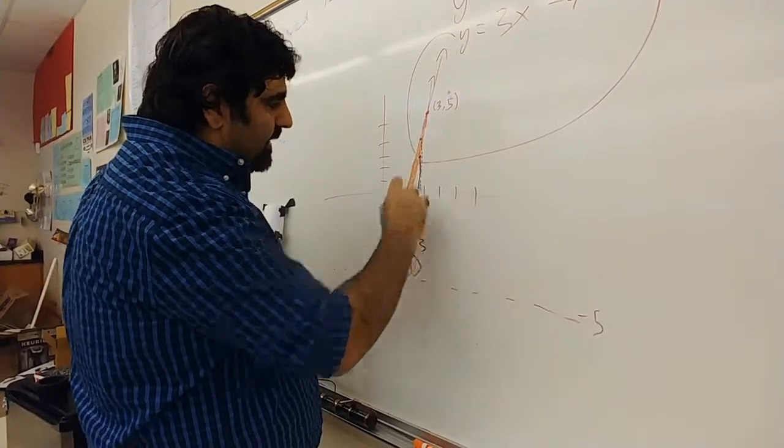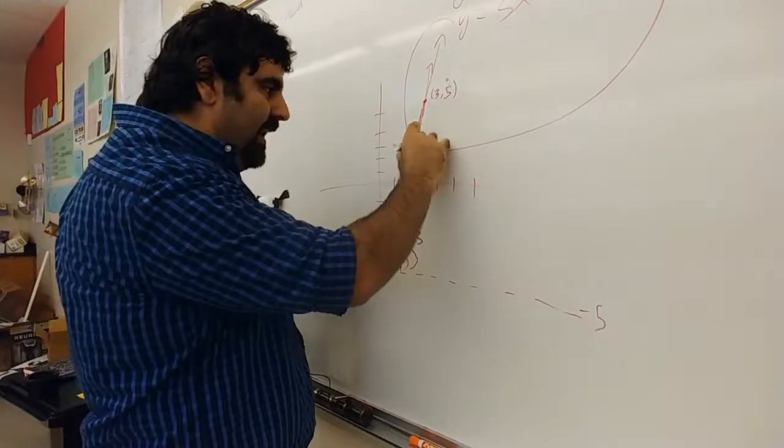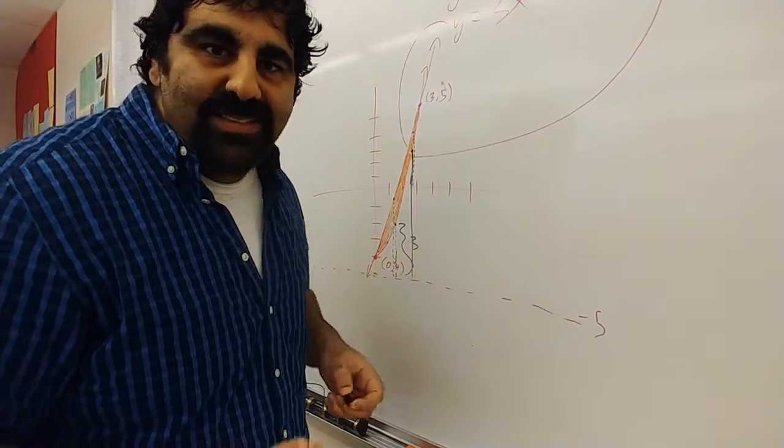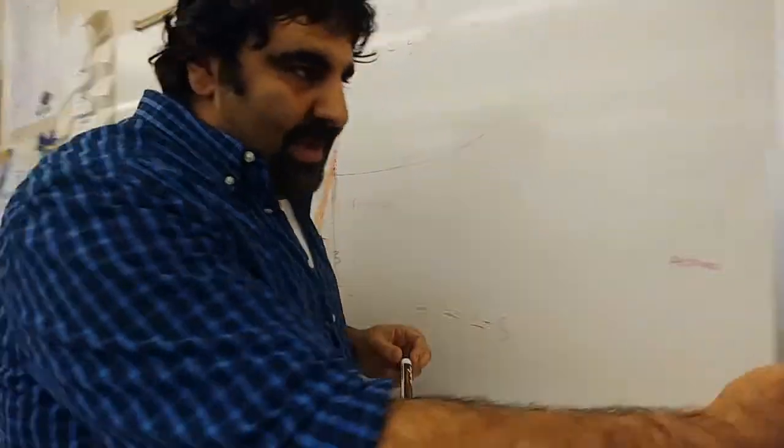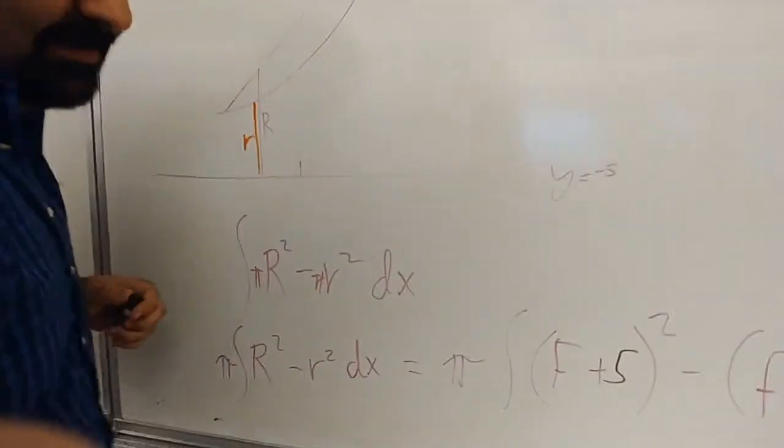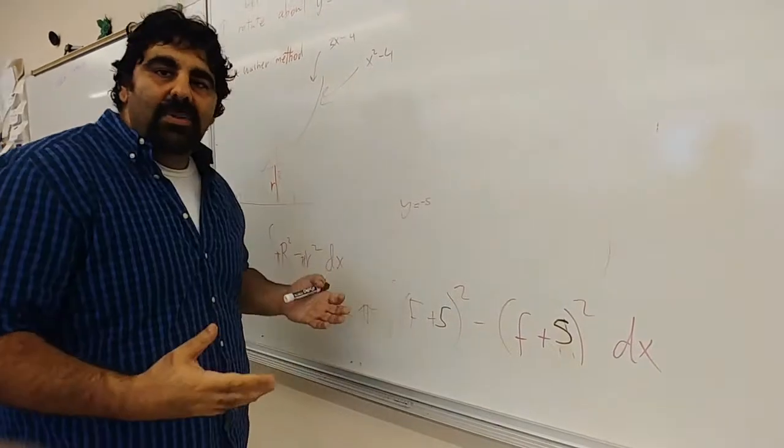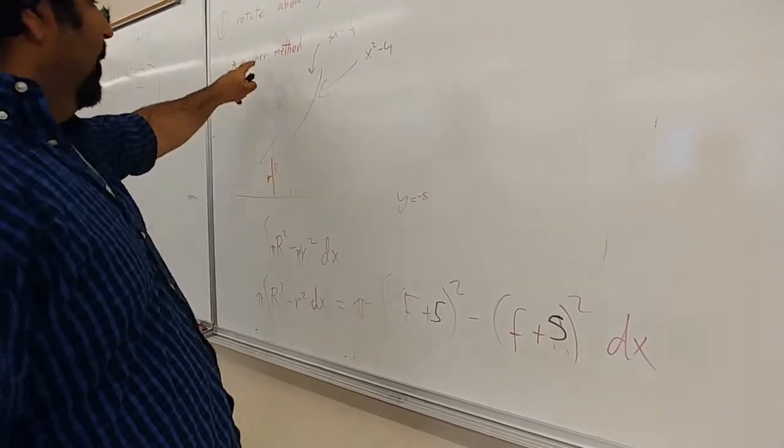But I need another 5 in order to get 8, because the radius to rotate around y equals negative 5 will be 8 in this case. Same thing will be true for the line. So adding 5 to my function ended up expressing the two radiuses that I need in order to do the washer method.